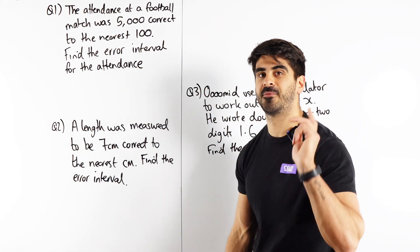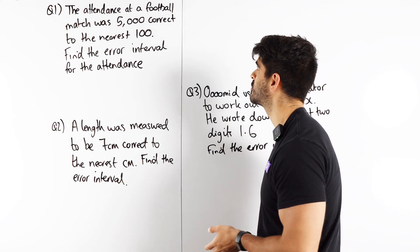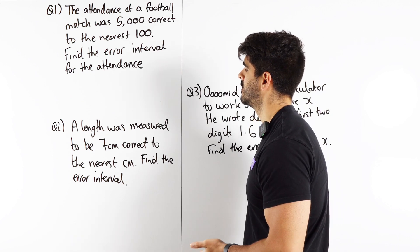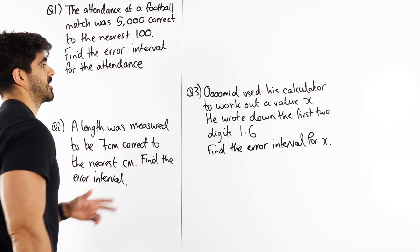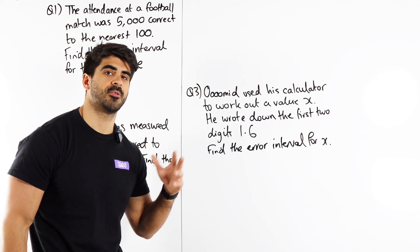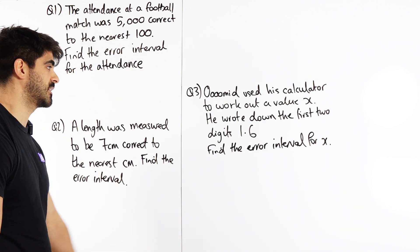So check out this first question. It says the attendance at a football match was 5,000 correct to the nearest 100. Find the error interval for the attendance. I've left all this space so I can show you guys with the number line what's going on and then I'm going to show you how we can very quickly find these error intervals by pattern recognition basically.